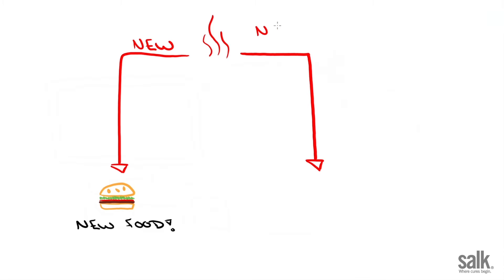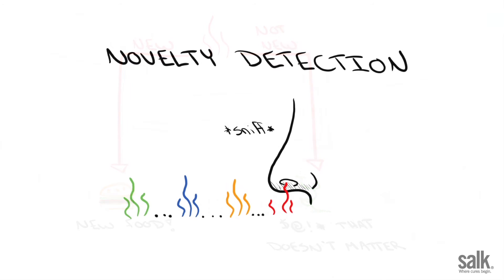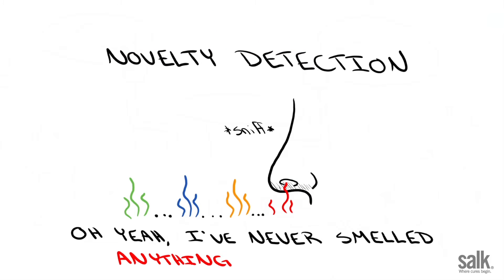And you want to do this accurately because otherwise, you're just going to unnecessarily burden your attention on that doesn't matter. But how do you perform this comparison so efficiently? How do you quickly say, oh yeah, I've never smelled anything like this?